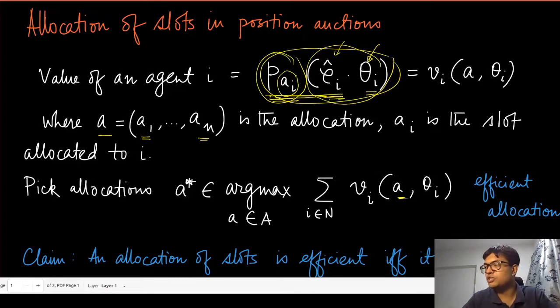The reason is very simple. All these p_i's have a monotone relationship when going from position one to position m. If you have a bunch of numbers which are ρ_i hat times θ_i, how should we place them? We should start with the highest value going to the highest position. Any other allocation of these advertisers to those positions will automatically be suboptimal.